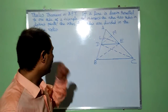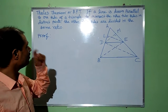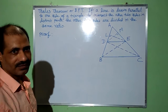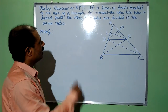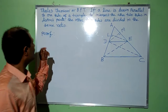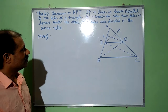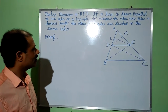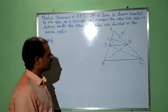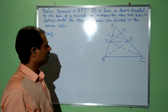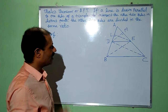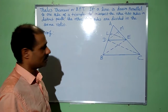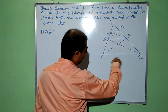Namaste everyone. Here I am going to establish Thales theorem, also known as Basic Proportionality Theorem or BPT. Its statement is: if a line is drawn parallel to one side of a triangle to intercept the other two sides in distinct points, the other two sides are divided in the same ratio. Here ABC is a given triangle in which D and E are two distinct points and a line DE is drawn parallel to BC.